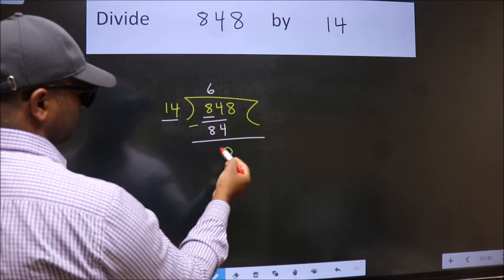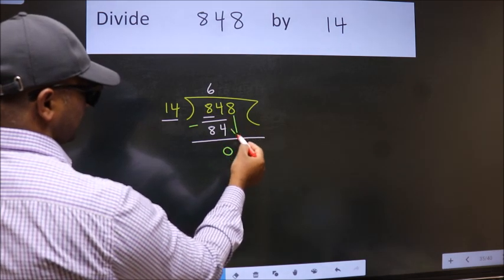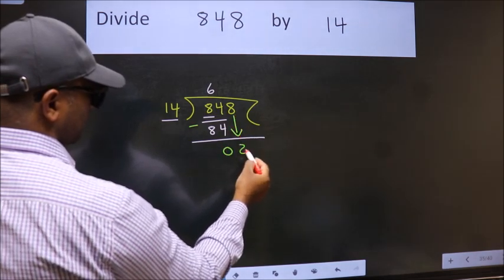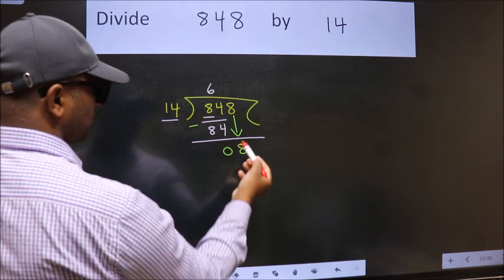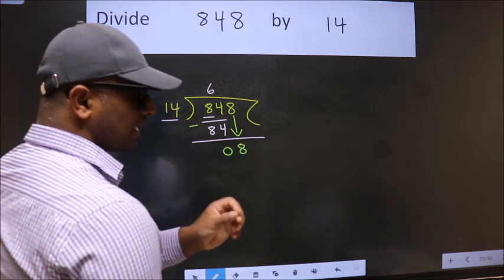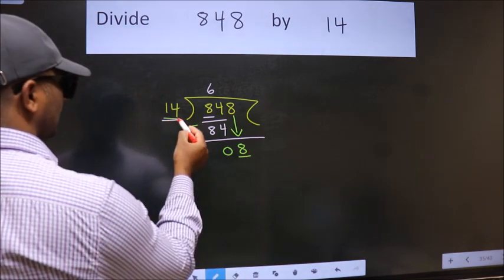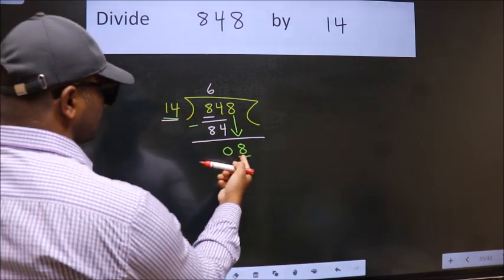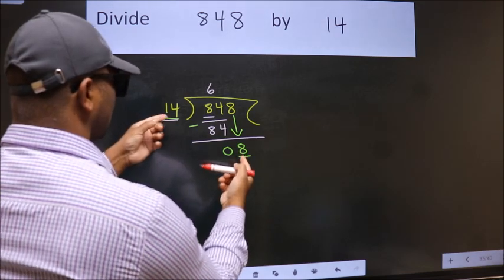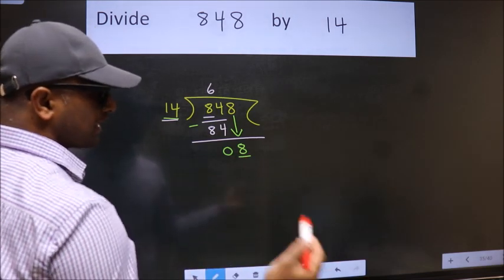After this, bring down the beside number, so 8 down. After this step, the mistake happens. And the mistake is this: here we have 8, here 14. 8 is smaller than 14, so what many do is they directly put dot, take 0, which is wrong.